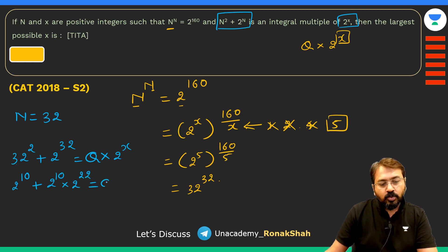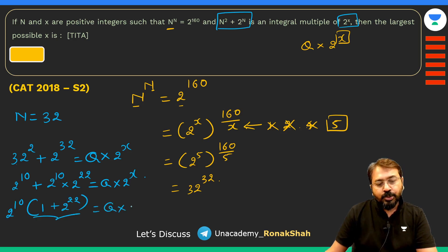So you can easily make out that 2^10 can be taken out as a common factor, so it will be left with 1 + 2^22. Definitely this is going to be an integer which is equal to Q × 2^X. So I can say Q is equal to this part and X has to be equal to 10. So the answer to this question is 10.